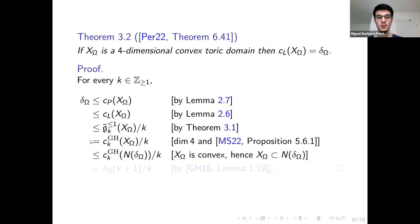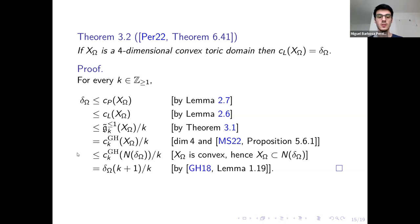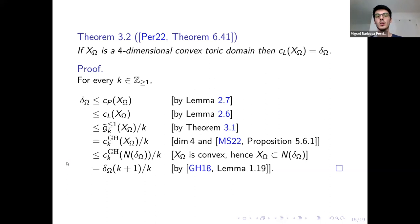I use a result by Gutt and Hutchings where they compute the value of their capacity on the non-disjoint union of cylinders, and the result follows because this computation holds for every k. The next two results have the goal of proving this conjecture in dimensions other than 4, and for this I will make use of Siegel's higher symplectic capacities.